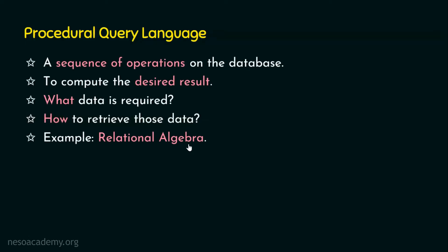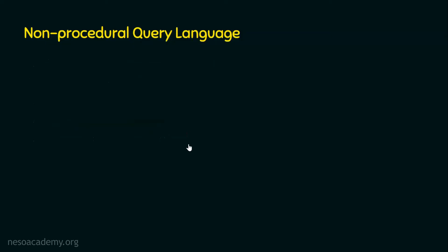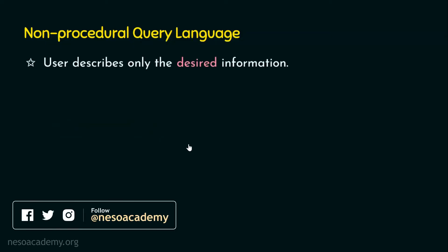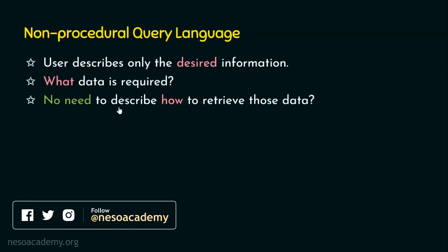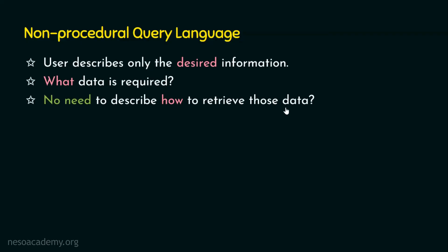We are done with the procedural query language. Let's now move on to the second category — the non-procedural query language. In a non-procedural query language, the user describes only the desired information. We simply say what data is required; there is no need to describe how to retrieve those data. If we instruct how to retrieve the data, it becomes procedural. In non-procedural query language, we simply say what data is required without mentioning how to retrieve it.